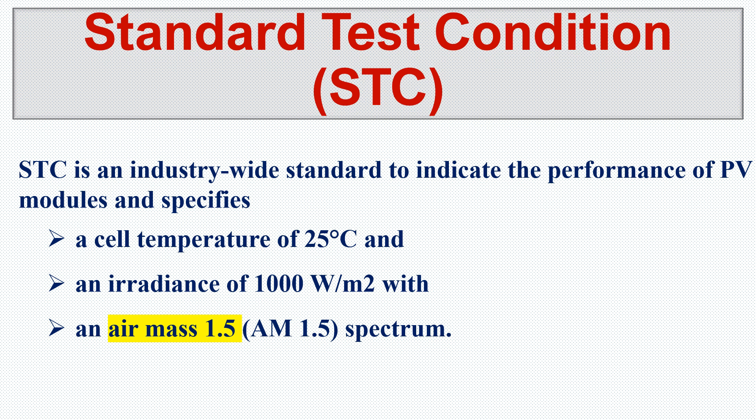In Standard Test Condition, the cell temperature should be 25 degrees Celsius, solar radiation should be 1000 watts per meter square, and the last one is air mass should be 1.5 spectrum — so we write it as AM 1.5. The manufacturer says: I tested my panel in these three conditions in a controlled environment, and my panel produced 300 watts.